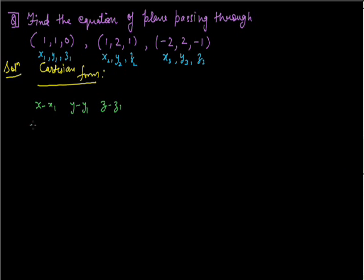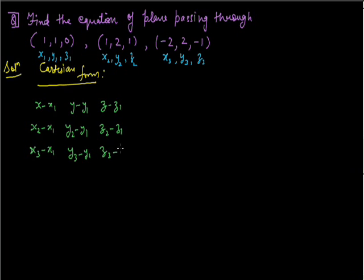The second row is (x2 minus x1), (y2 minus y1), (z2 minus z1), and the third row is (x3 minus x1), (y3 minus y1), (z3 minus z1). The determinant of this equals zero.